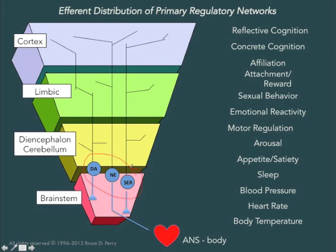As you will recall, very, very important neural networks that are widely distributed throughout multiple areas of the brain originate low in the brain. These neural networks include dopamine, norepinephrine, and serotonin. They're very, very important because they influence outflow from the brain to the body and distribute to almost every other part of the brain, playing a major role in essentially all brain-mediated functions. The sensitivity of these systems can be dramatically changed by the pattern of stimulation that they receive.